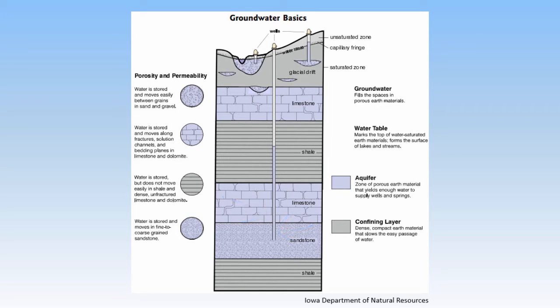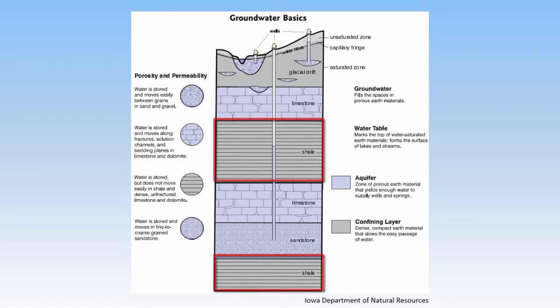The geologic units that slow or prevent the movement of water are called confining layers, or aquitards. There can be multiple aquifers and aquitards at a single location, as shown here.